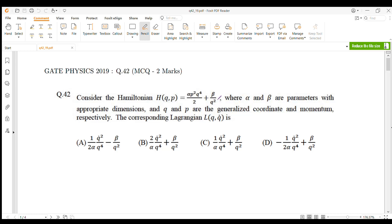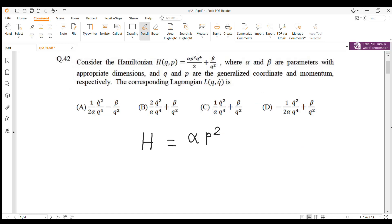plus beta by q squared, where alpha and beta are parameters with appropriate dimensions, and q and p are the generalized coordinate and momentum respectively. We need to find out the corresponding Lagrangian. Let's solve this question.